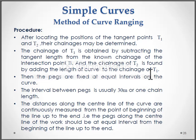For practically execute this method we are following this procedure. Let us see. After locating the positions of the tangent points t1 and t2 their chainages may be determined. The chainage of t1 is obtained by subtracting the tangent length from the known chainage of the intersection point B and the chainage of t2 is found by adding the length of curve to the chainage of t1.